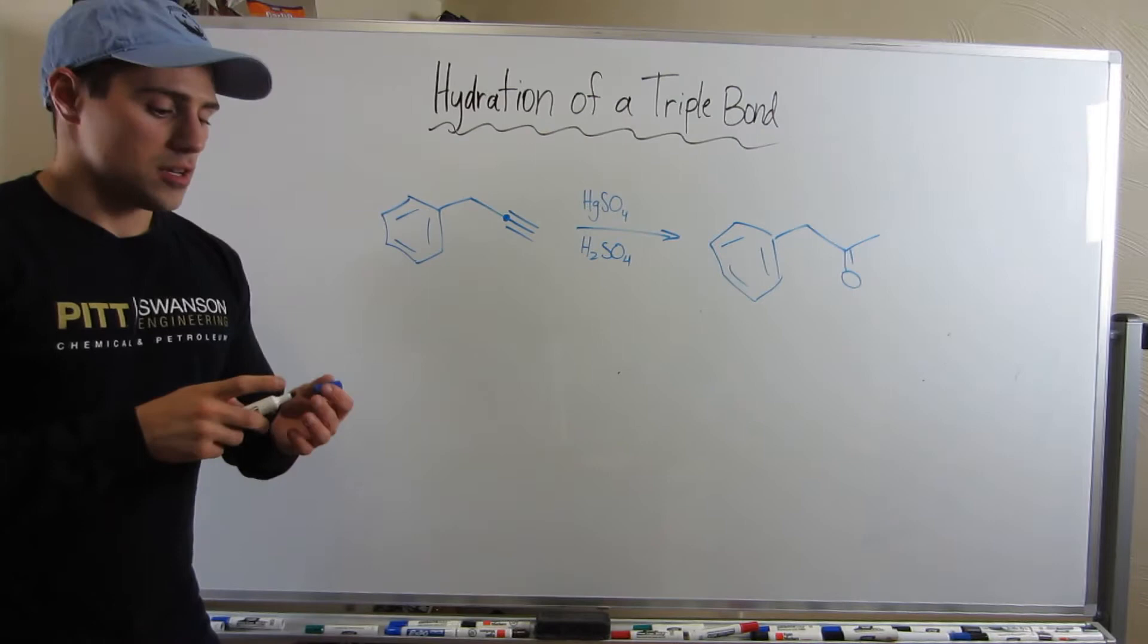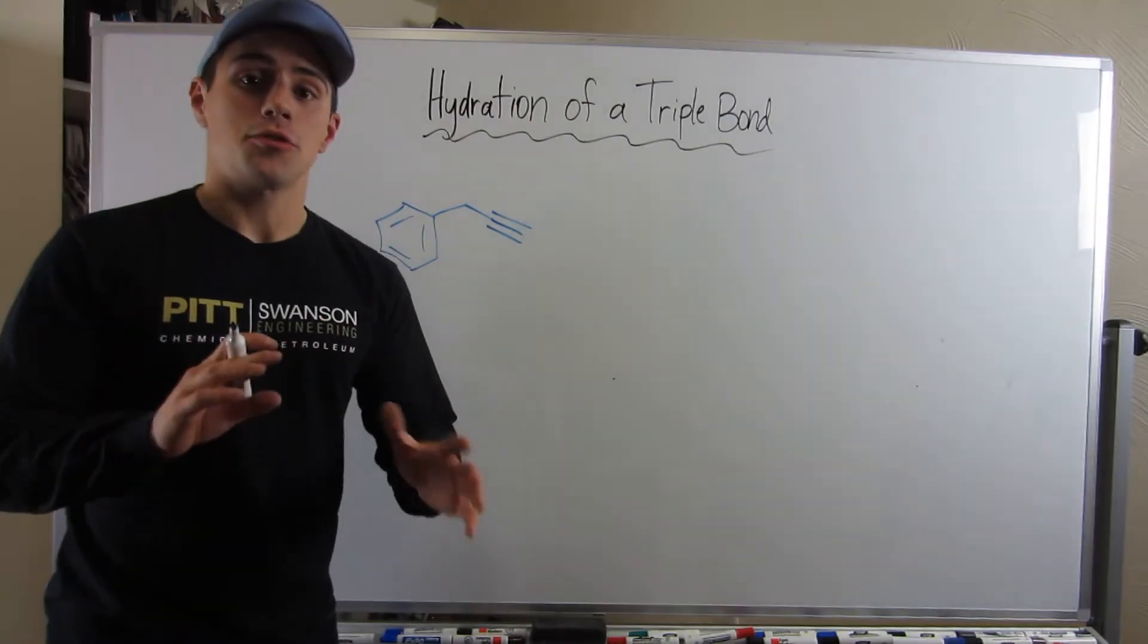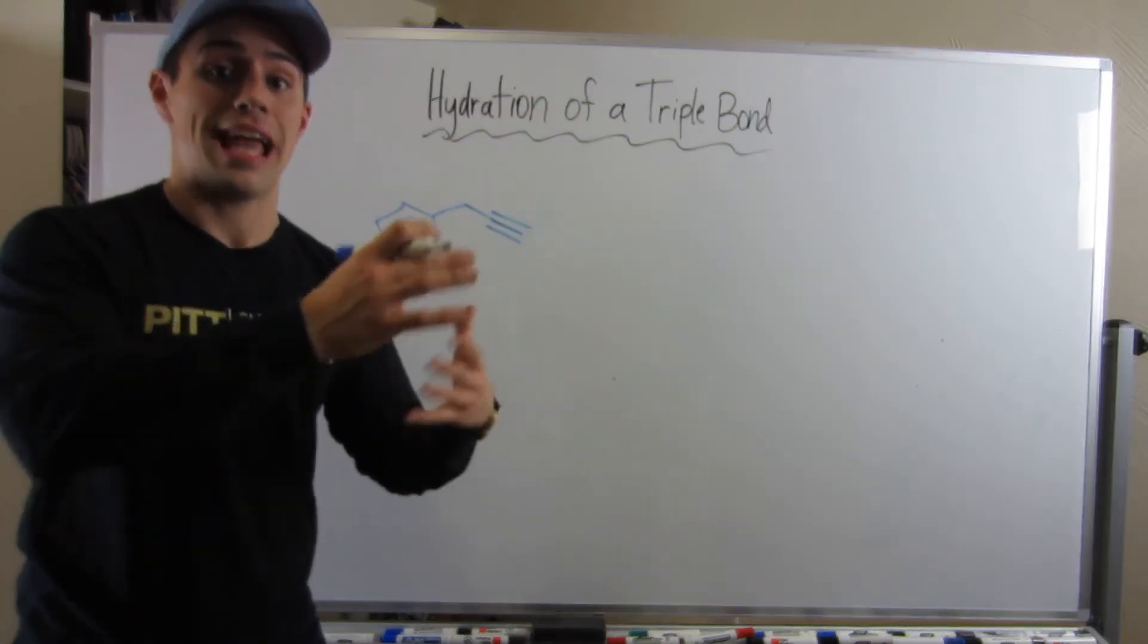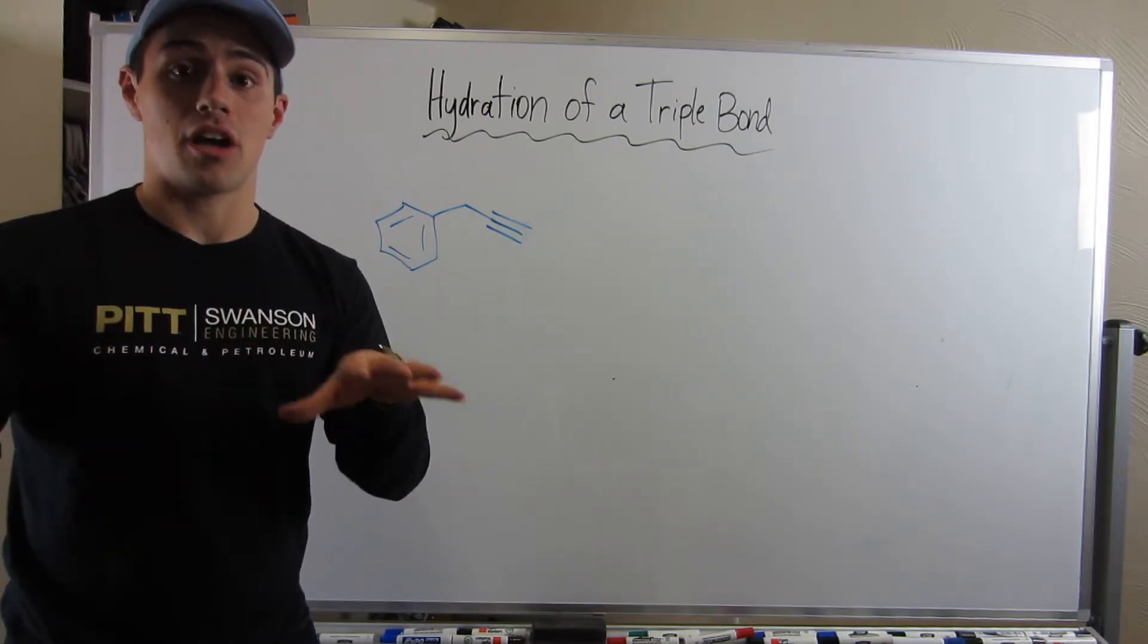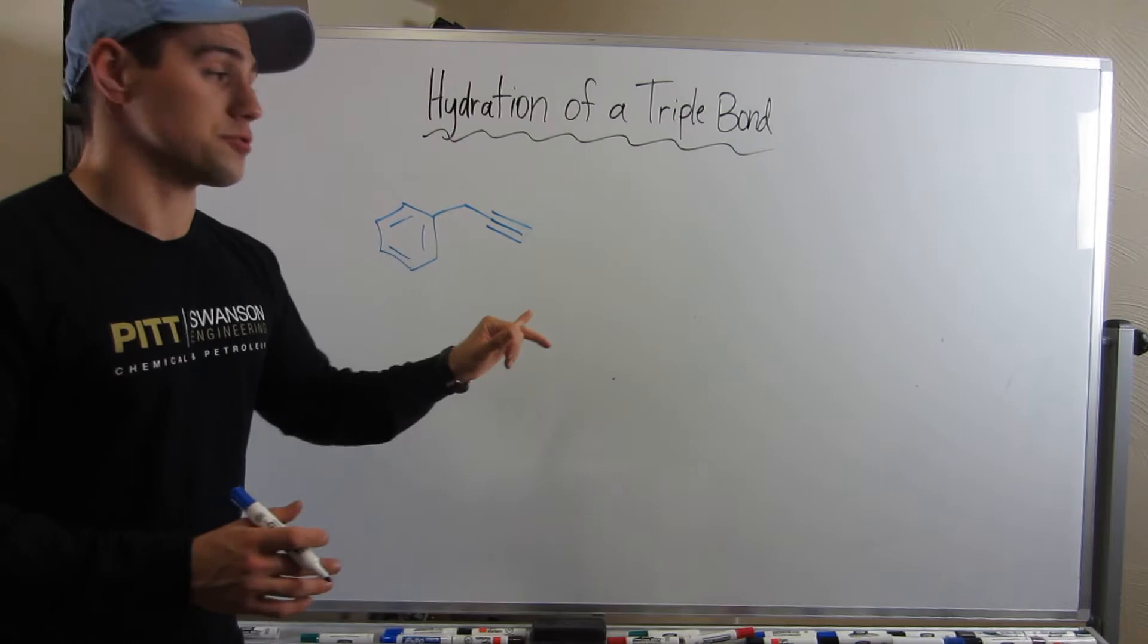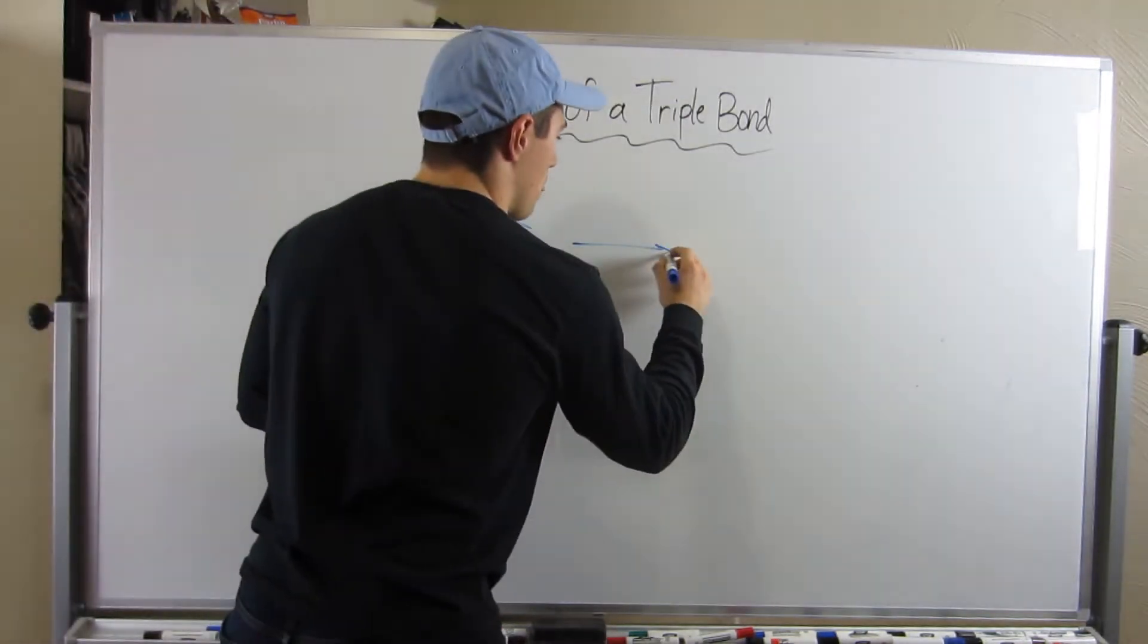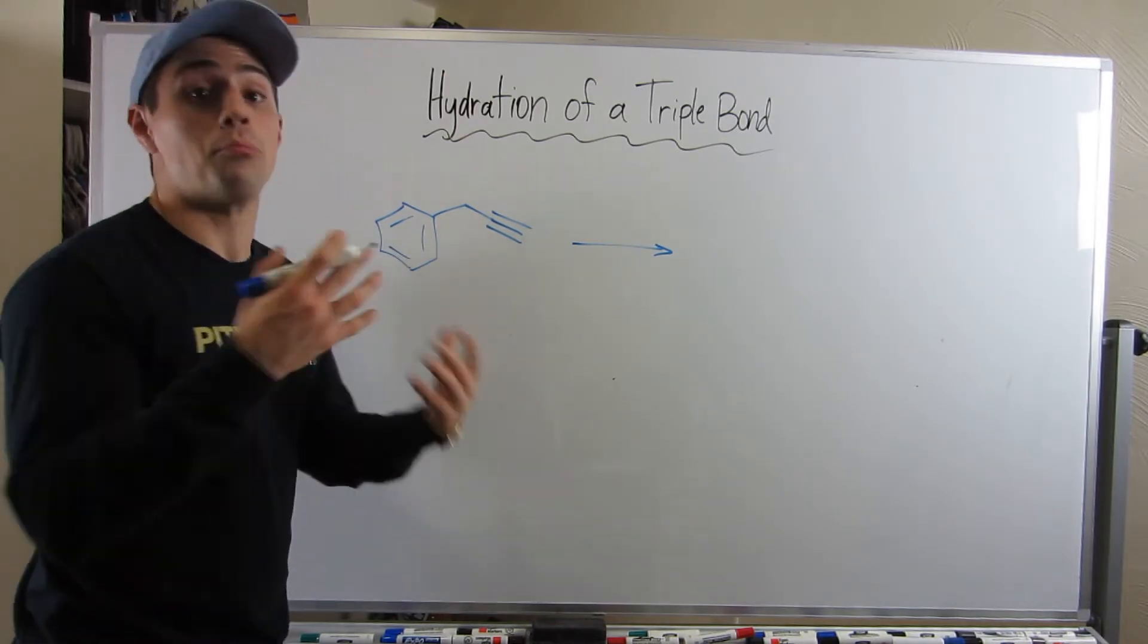Just like there was that Markovnikov addition of water for alkenes and we get the anti-Markovnikov addition of water for alkenes, so do we also have that for triple bonds. We just did the Markovnikov addition, so let's look at the anti addition. Remember, in the anti-Markovnikov addition for alkenes, we saw boron—that was our tip-off. So here you see something similar, like BH3, or you might even see R2BH. Just boron, that's your tip-off.